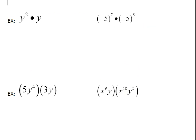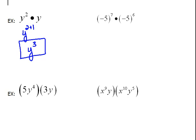Let's do some examples. Here we have y squared times y. Looking at our rule, if we take the base, which is y, we can add the exponents. Anytime you're multiplying like bases, you add the exponents. So that would be y to the 2 plus 1 power, which is y cubed.